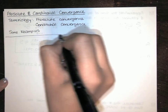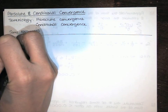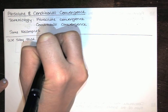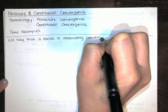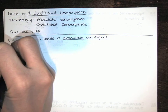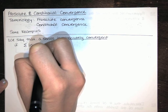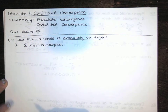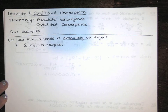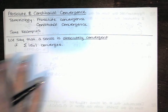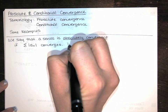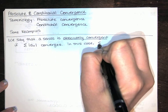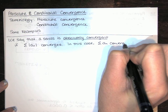We say that a series is absolutely convergent if we have a series given by the sum as n goes from something to infinity of a sub n, and the series of its absolute values converges. In this case the original series also converges. So we've got two series that converge: this series converges and its series of absolute values converges.